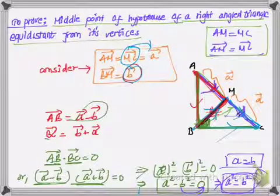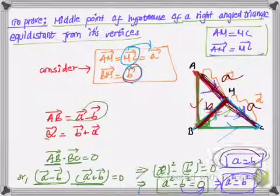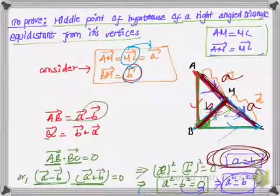So as we have considered that the length BM is equal to B, and length AM is equal to A, MC is equal to A, and we have proved here that A is equal to B, it means that this length B, this length A, this length A, they are all the same. They are all equal.